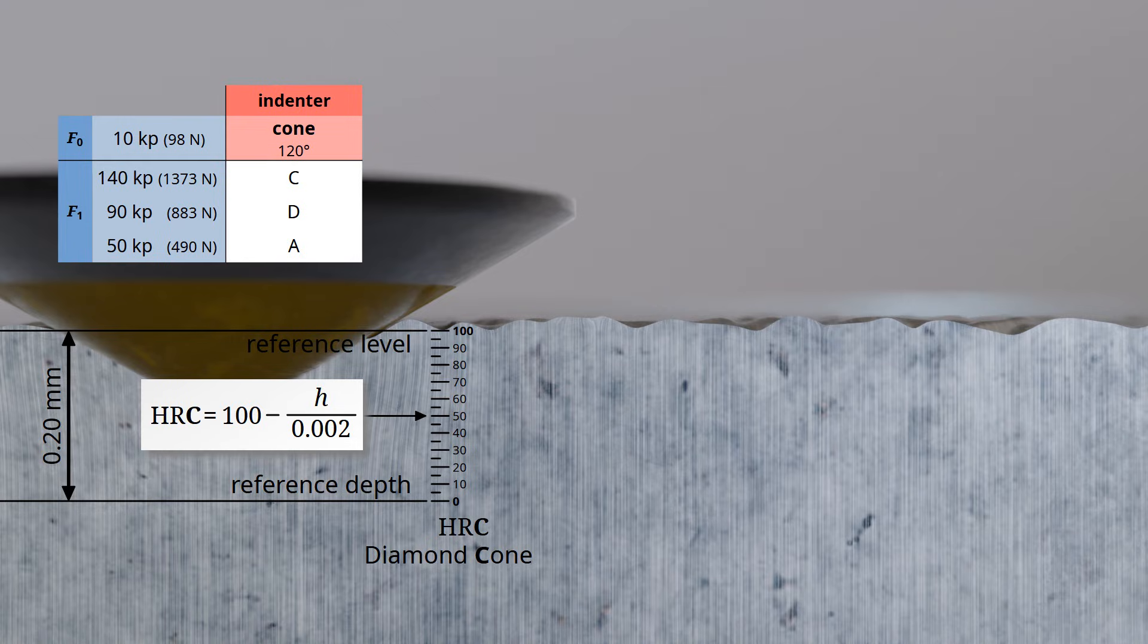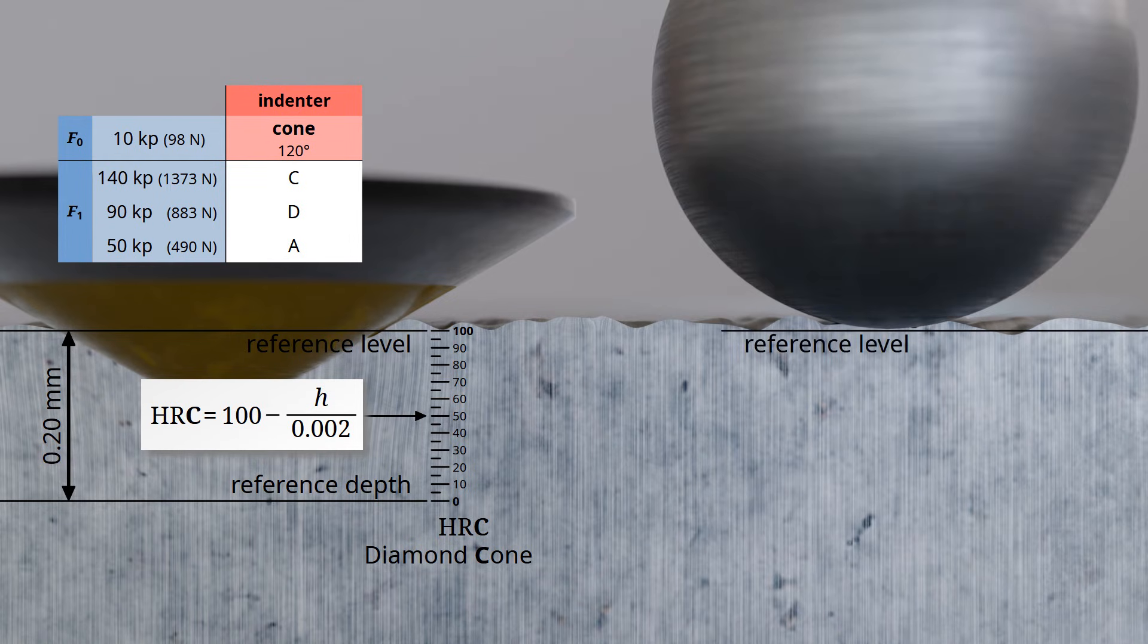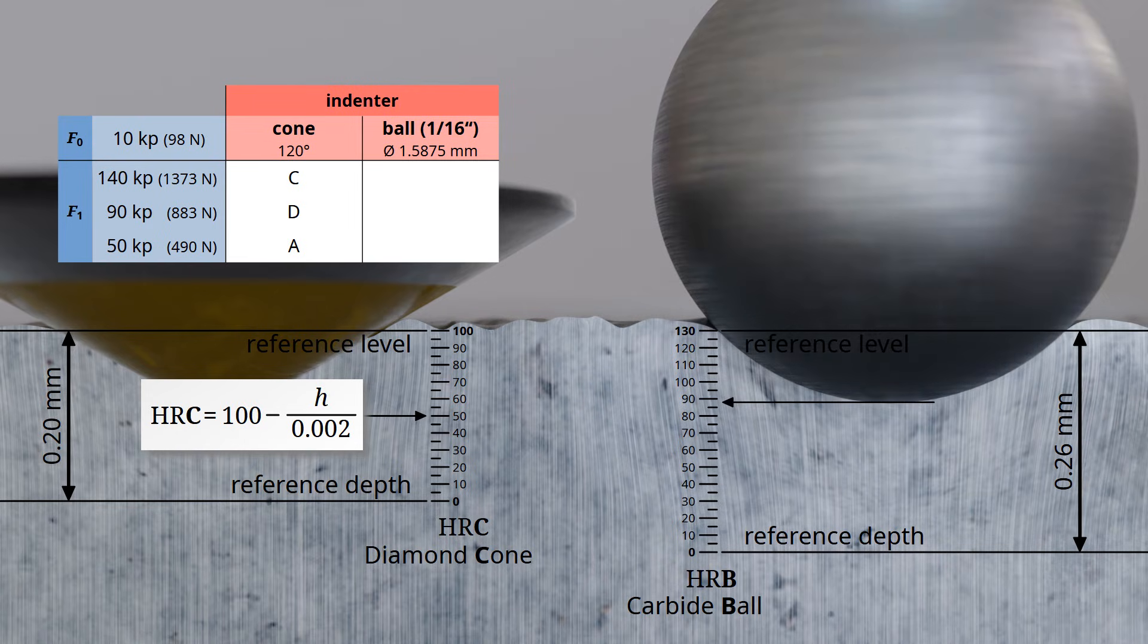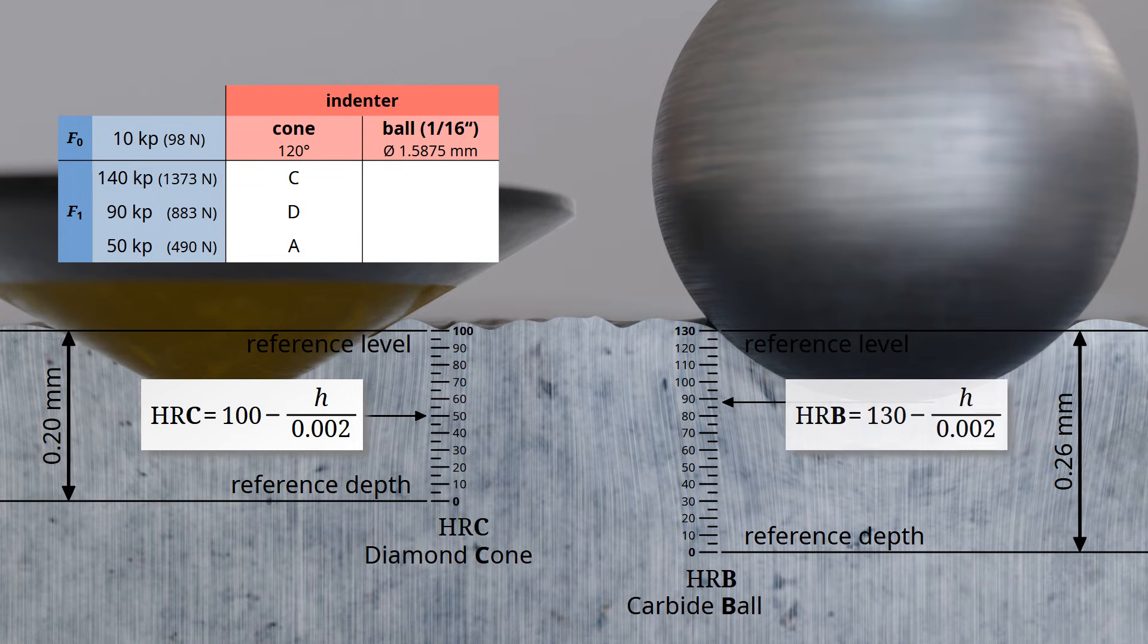When testing relatively soft materials, a diamond cone would penetrate too deeply, resulting in an indentation that exceeds the reference depth of 0.2 mm. For this reason, soft surfaces are tested using cemented carbide balls, and the reference depth is extended to 0.26 mm. The cemented carbide ball has a diameter of 1/16th of an inch, which equals 1.5875 mm. The hardness values are still subdivided in increments of 2 micrometers. Therefore, the use of cemented carbide balls results in hardness values ranging theoretically from 0 up to a maximum of 130. Using the given formula, the Rockwell hardness value HRB can be calculated based on the indentation depth h, with the depth specified in millimeters.